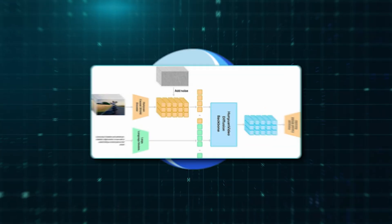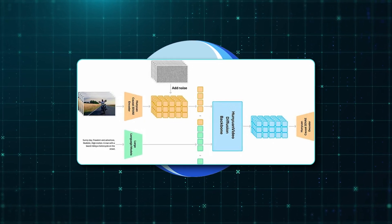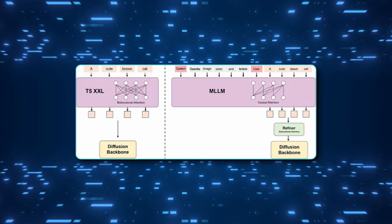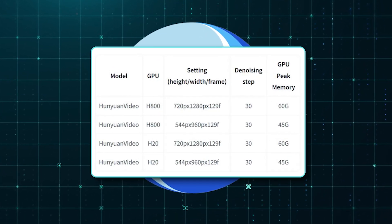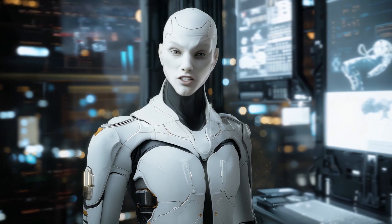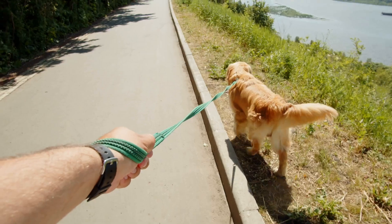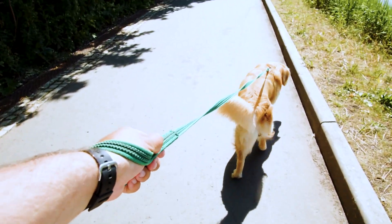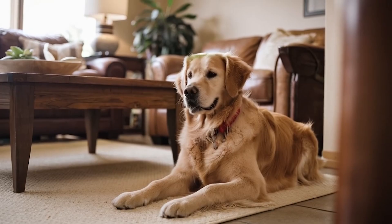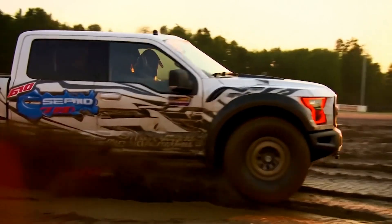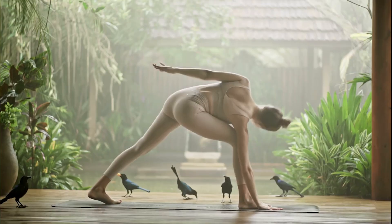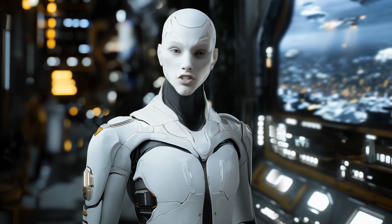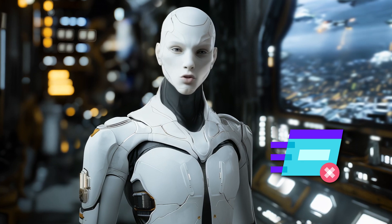HunYuan Video's architecture is interesting. It uses a decoder-only multimodal large-language model as its text encoder, rather than the standard CLIP or T5XXL setups. This approach helps it follow instructions better and grasp fine details. It also employs a token refiner that takes a simple prompt — like 'a man walking his dog' — and automatically enriches it with more details to produce higher quality output. This refinement can add elements like specific lighting conditions, intricate scene setups, or subtle attributes of the subjects, ensuring the final output feels more nuanced and complete. The result is more vivid, descriptive generations without the user needing to write a long prompt.